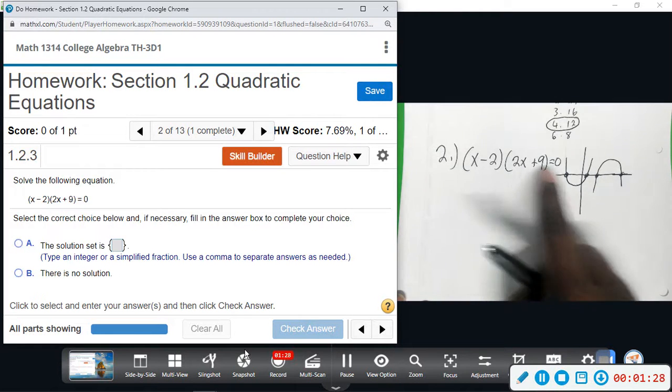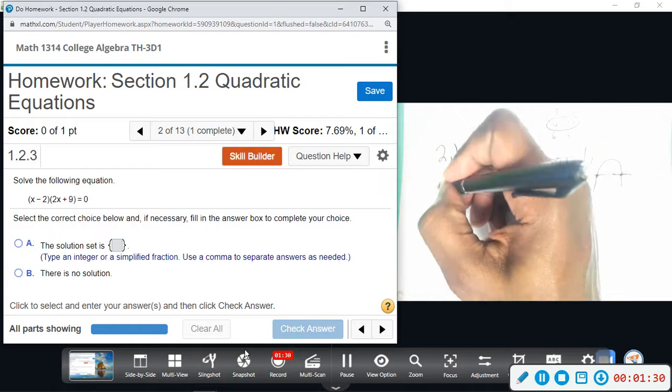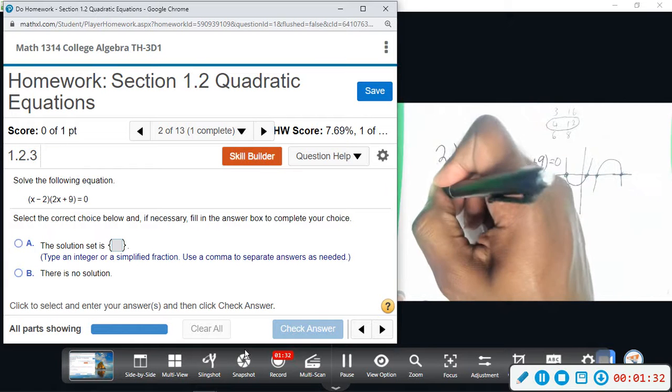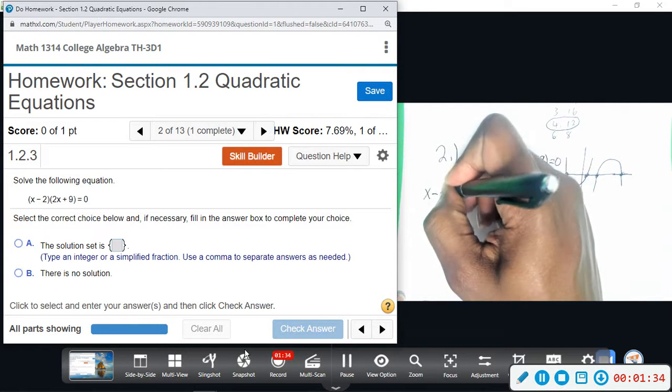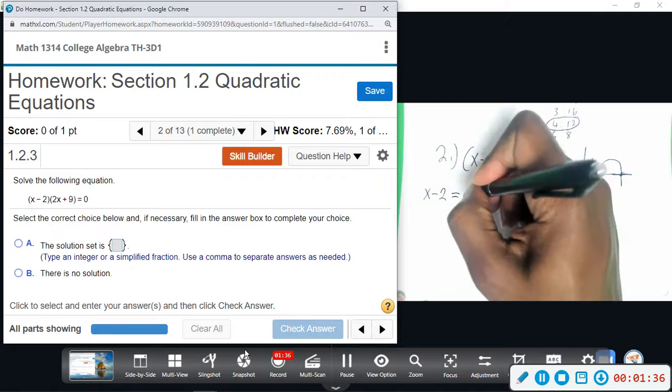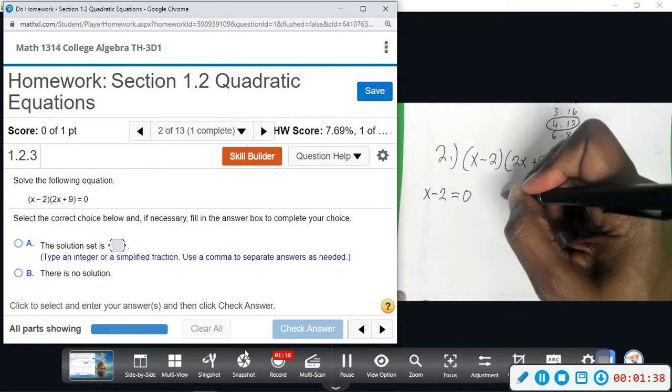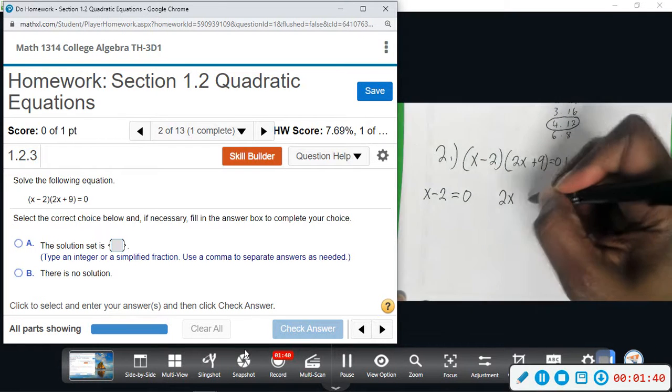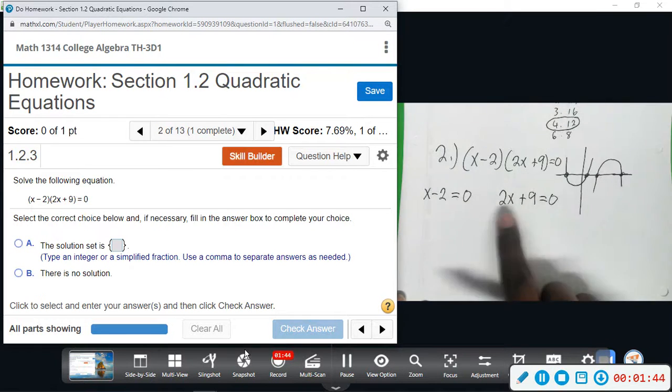So the way we do that is we take the x minus 2 and set it equal to zero. And we do the same thing over here—we do 2x plus 9 and set that equal to zero. We find out what makes each of them zero.